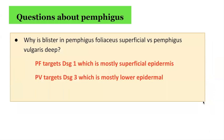Armed with the knowledge of the Desmoglein compensation theory, we go back to the original questions. Why is the blister in pemphigus foliaceus superficial compared with pemphigus vulgaris, which has deeper blisters? In pemphigus foliaceus, it targets DSG1, which is expressed mostly in the superficial epidermis. In this layer, there is minimal compensation by DSG3, causing acantholysis and splitting in the superficial epidermis. In contrast, pemphigus vulgaris targets DSG3, which is predominantly expressed in the lower epidermis and throughout the mucosa — therefore the affected skin produces deeper blisters.